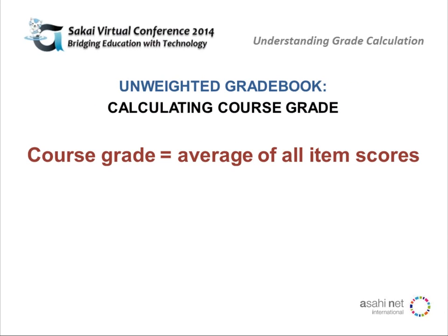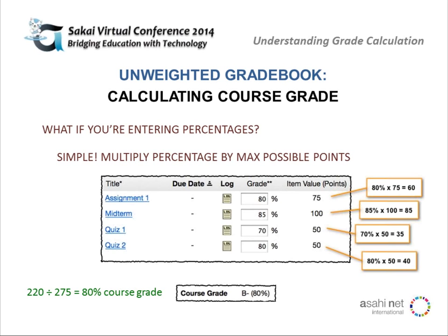It might be tempting to say it's just the average of all item scores, but it's actually the sum of all the earned points for scored items — emphasis on scored — divided by the sum of possible points for scored items. So in this case, we're looking at 220 points earned for scored items divided by 275 for what's possible, and that will give you a course grade of 80.